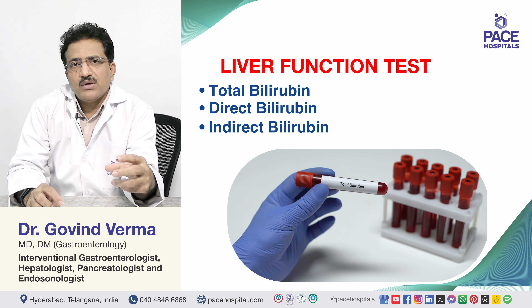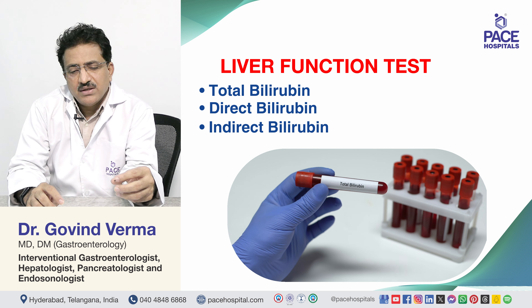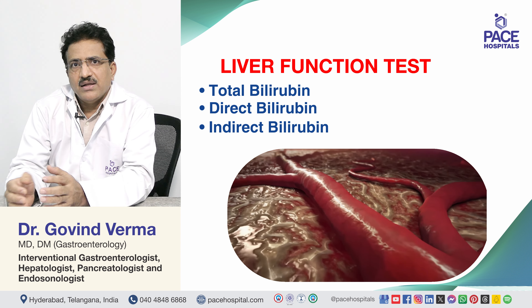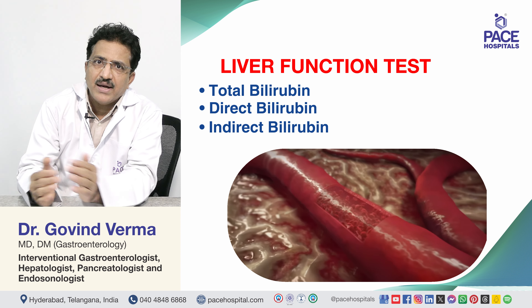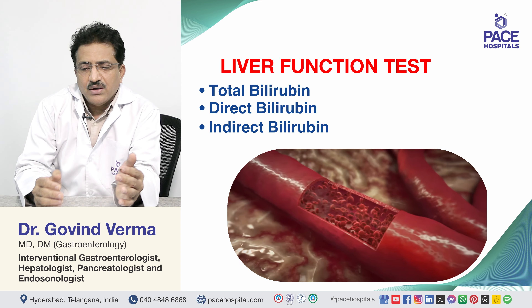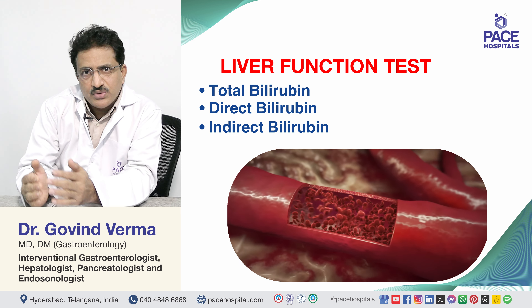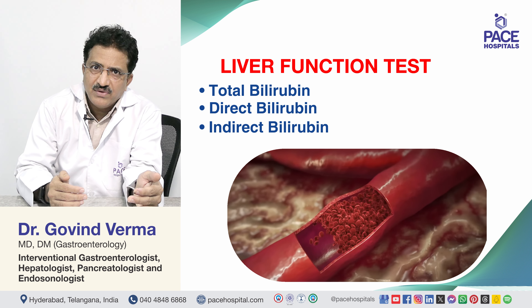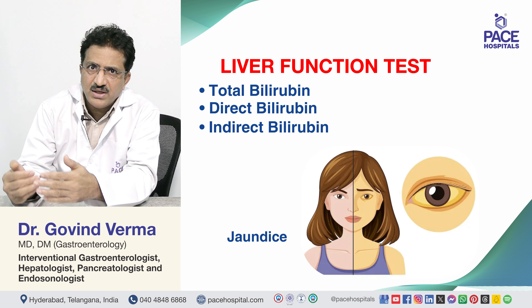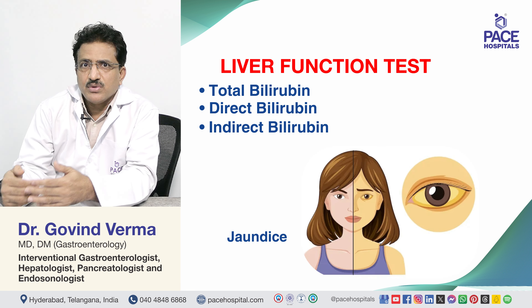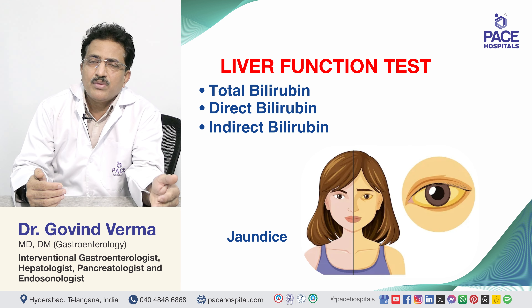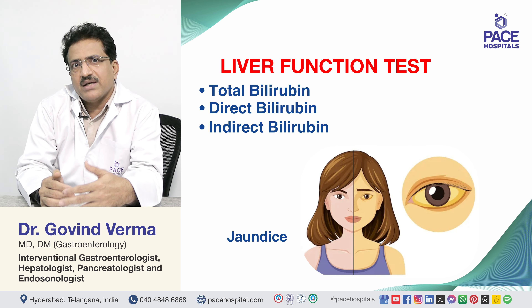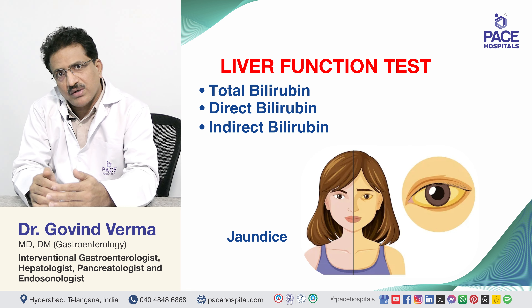In liver function tests we see two fractions: total bilirubin, and direct and indirect bilirubin which together give the total bilirubin value. This distinction is important because certain disorders cause indirect bilirubin elevation while others cause direct bilirubin elevation. Direct bilirubin is water-soluble and gets excreted through urine, so bilirubin in urine indicates elevated conjugated bilirubin. Indirect bilirubin is water-insoluble and never excreted in urine.